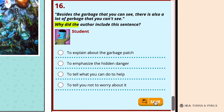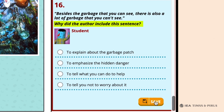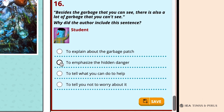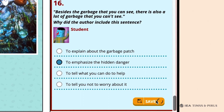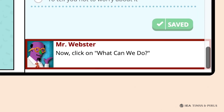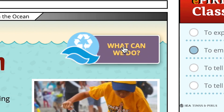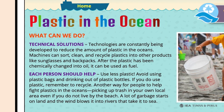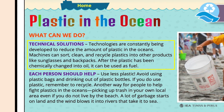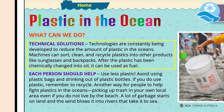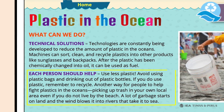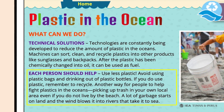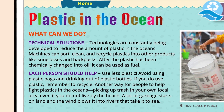Question 16 asks students why the author included the sentence about garbage in the ocean that cannot be seen. The answer is the second option: to emphasize the hidden danger. For the final webpage, Mr. Webster directs students to click on 'What Can We Do?' The first paragraph describes technical solutions to ocean pollution by recycling or repurposing plastic in the oceans. The second paragraph gives ways individuals can reduce the amount of plastic in the oceans by using fewer plastic products, recycling plastic, and picking up trash when they see it.